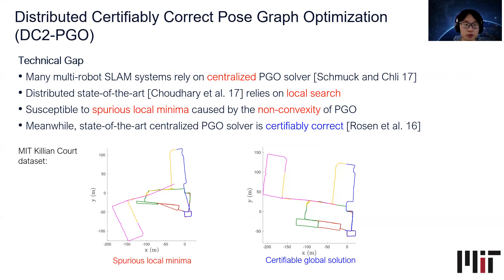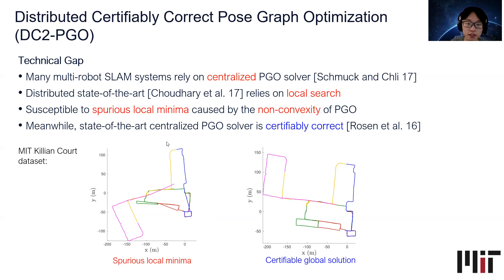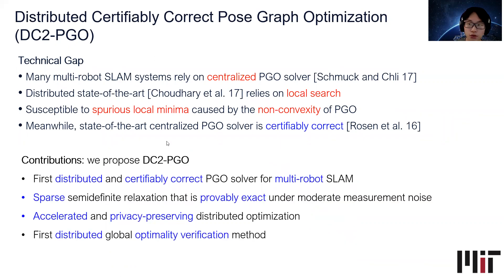Ideally, we would like to obtain a certifiable global solution — meaning we can not only obtain the global minimizer to PGO, but also obtain a computational certificate of the global optimality of our solution. This is recently achieved by state-of-the-art centralized PGO solvers. A natural question is whether we can extend such a certifiably correct paradigm to a distributed regime. This leads to the contribution of this work: DC2PGO, the first distributed and certifiably correct PGO solver for multi-robot SLAM.